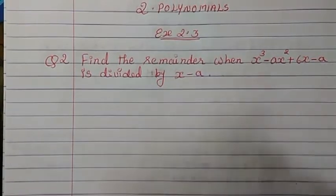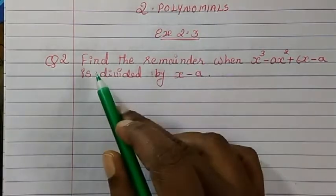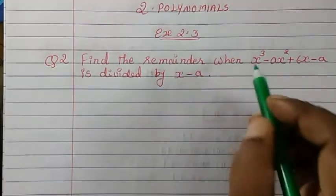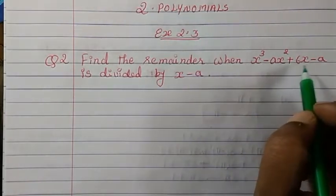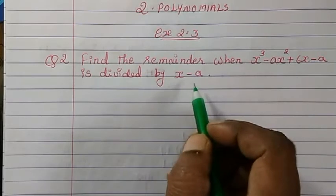Today we are going to study Exercise 2.3, Question 2. Find the remainder when x³ - ax² + 6x - a is divided by x - a.